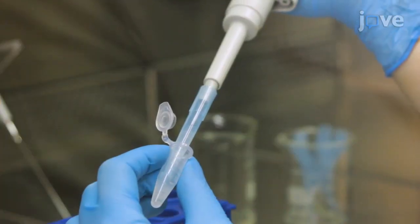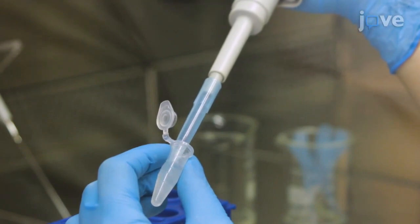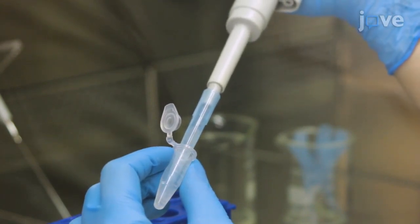For mechanical tissue dissociation, gently pipet the tissue trypsin mixture up and down 15 times.